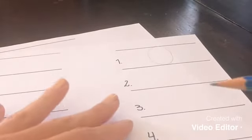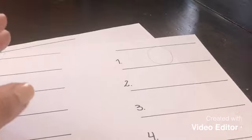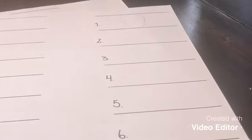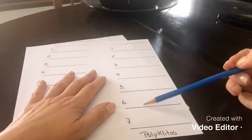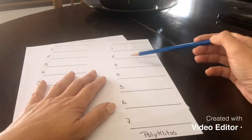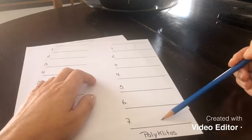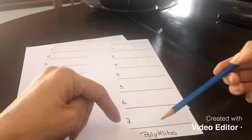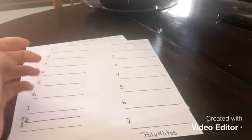In our first case, we're going to talk about Polyclitus. Polyclitus had established a canon of the seven heads. What does that mean? We're going to have one head, two, three, four, five, six, and seven. So we base ourselves in seven heads to draw the human body.